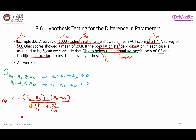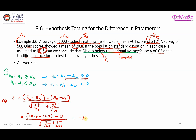Substituting the values: the sample mean for Ohio is 20.8, minus the sample mean for nationwide 21.4, minus zero — because under the null hypothesis mu Ohio minus mu nationwide equals zero. The population variance is 3 squared = 9, so we have 9/500 plus 9/1000 in the denominator. This gives a test statistic of negative 3.65.